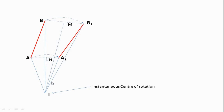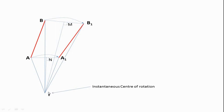Regarding this instantaneous center: if the link changes its position from A1 to A2 and B1 to B2, the center will also change its position. That is why it is called a temporary center, also known as an imaginary or virtual center, because every time the position of the link changes, the instantaneous center changes its position.